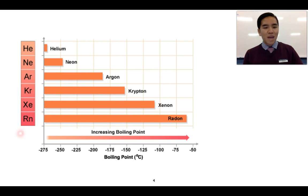What we can see is that there is this trend of increasing boiling point going from helium down to radon. One thing to note is that their boiling points are still relatively low, all in the minus degrees Celsius range.